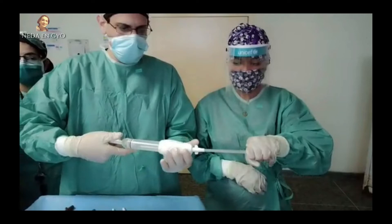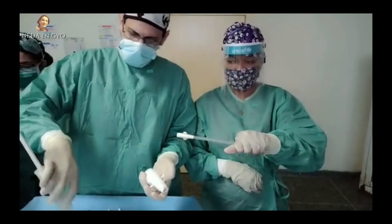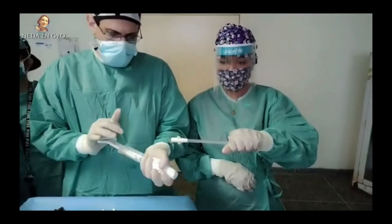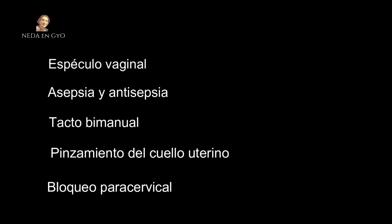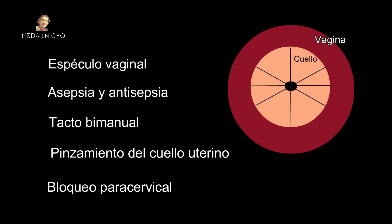Hay que tener en cuenta que el AMEU no es una cureta. Una vez que el cilindro se llene, se retira la cánula. Para realizar el procedimiento se debe introducir un espéculo vaginal, realizar asepsia y antisepsia, un tacto bimanual previo para ver la posición del útero, pinzamiento del cuello uterino, bloqueo paracervical en hora 4 y hora 8, y se procede a la aspiración.